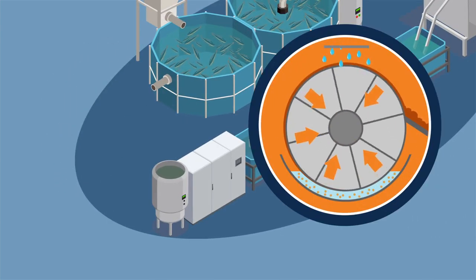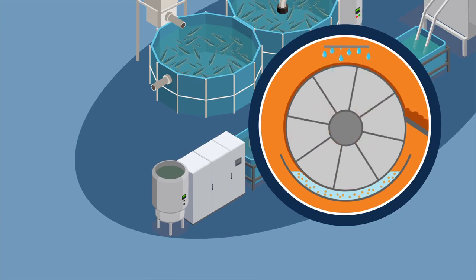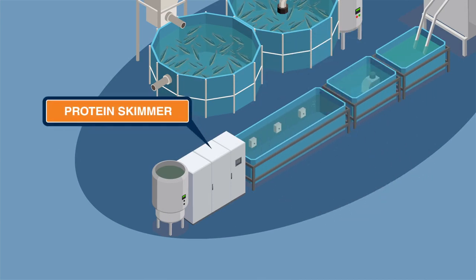A mechanical drum filter is used to remove all precipitates from fish feces. The clarified water is then treated downstream with ozone in the protein skimmer to strip the water.